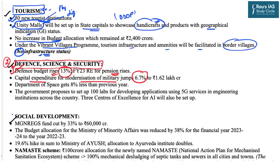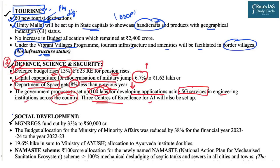The defense budget has seen a rise of 13%, with pensions also increasing. Capital expenditure for military modernization has jumped by 6.7% this year. These steps are relevant for main exam answers on government steps to boost national security. In contrast, the Department of Space has received 8% less than the previous year. For scientific research, the government has proposed setting up 100 labs for developing 5G service applications in engineering institutions across the country, along with three Centers of Excellence for Artificial Intelligence.